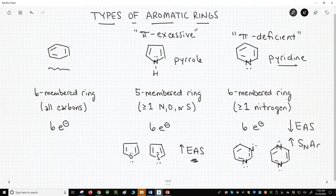In the next video, we'll see how the pi deficient aromatic rings can quickly react with nucleophiles without the need for electron-withdrawing r-groups on the ring.